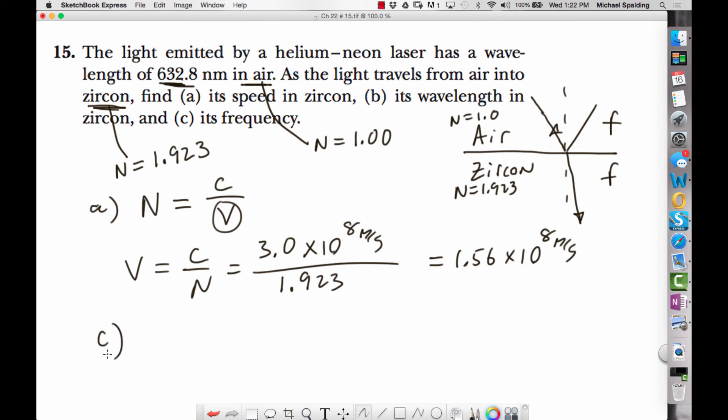So let's go ahead to part C and just find out what the frequency is of this light ray. So we're going to use C equals wavelength times frequency. Now why can I use that as opposed to V equals wavelength times frequency?